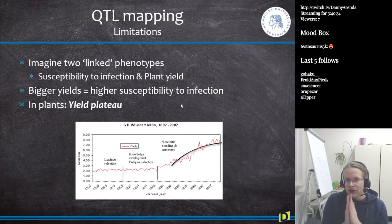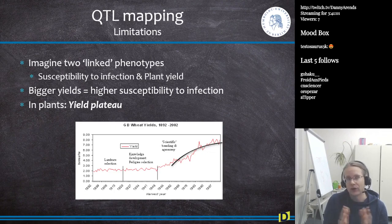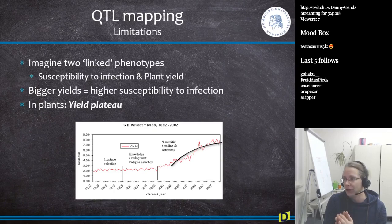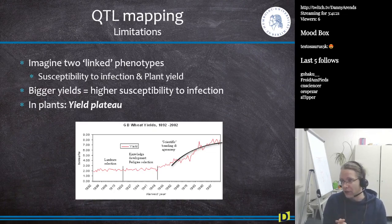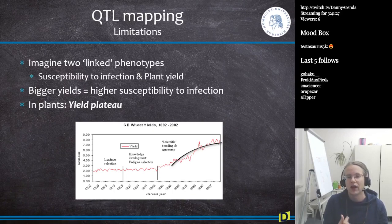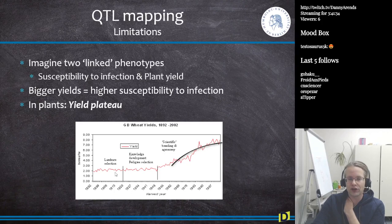So imagine two phenotypes which are very highly linked. Imagine that I am a plant biologist or a farmer growing corn. I'm very interested in the yield of my corn — the amount of grain that I get from a single plant — and the susceptibility to infection. Then these two things are highly correlated to each other, because bigger yields generally mean a higher susceptibility to infection. This is something that we have seen in many, many phenotypes.